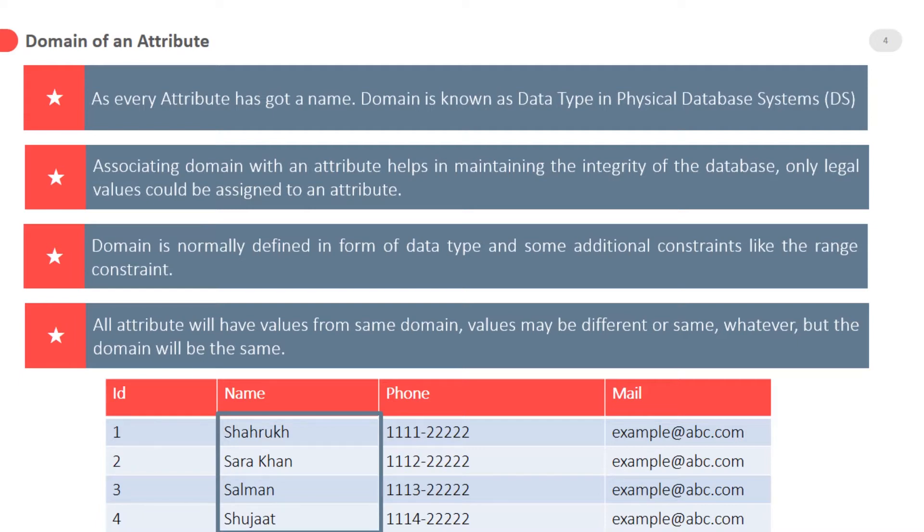A domain is also associated with an attribute. These two things - name and domain - are important parts of an attribute. Every attribute has got a name. Domain is known as data type in physical database systems. Associating domain with an attribute helps in maintaining the integrity of the database.